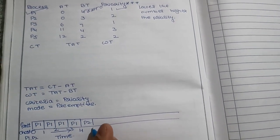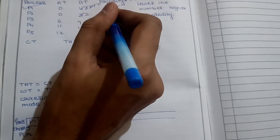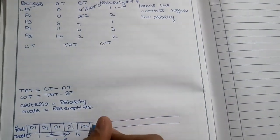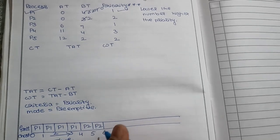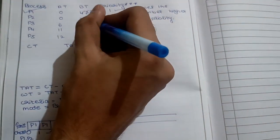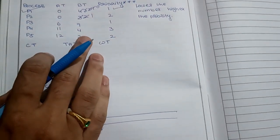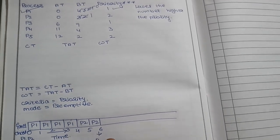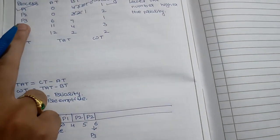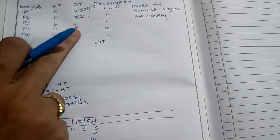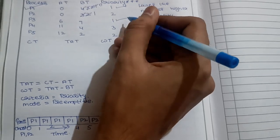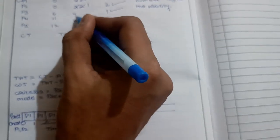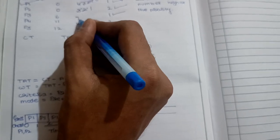So, otherwise one job — P2 has two balance burst time remaining. So why? Because P3 has not yet arrived. So P2 has one job remaining. But here, when P3 arrives, P3's priority node is 1, whereas P2's priority is 2. So I assign the next job to P3.